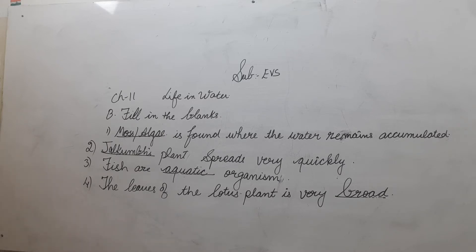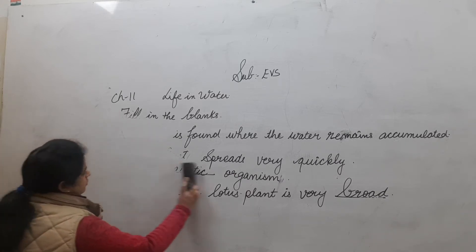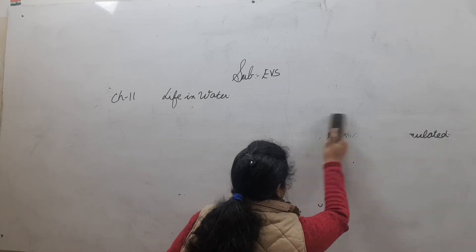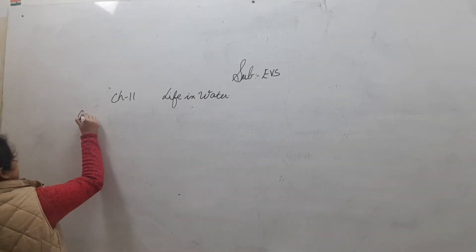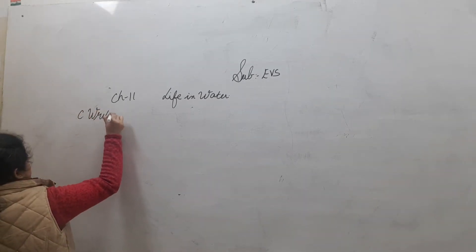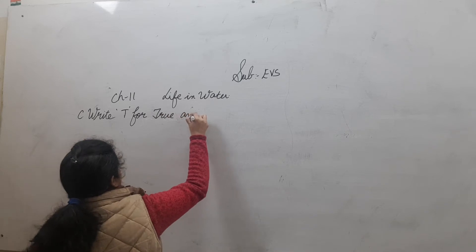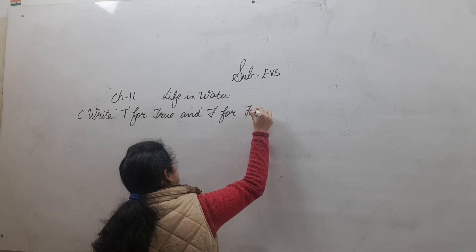Third: fish are aquatic organisms. Fourth: the leaves of the lotus plant are very broad. Now we will do the C part — true and false. Let's write T for true and F for false statements.